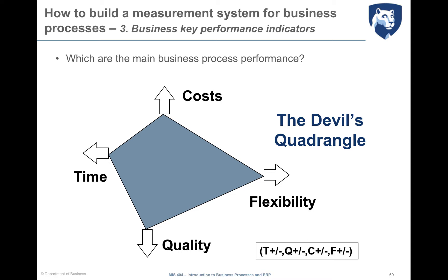Which are the main business process performance dimensions that should fall under the scope of our analysis? We can refer to the Devil Performance Quadrangle, which highlights that the four main business process performance dimensions are time, cost, flexibility, and quality. This is named the Devil's Quadrangle to highlight that these four performances are evidently in trade-off — you cannot improve one without negatively impacting another.